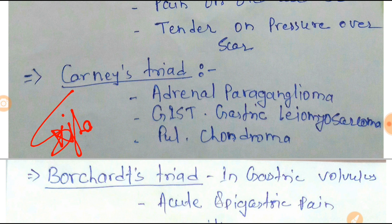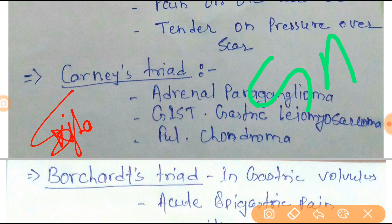Next one is Carney's Triad. The triad is adrenal paraganglioma, GIST — gastric leiomyosarcoma — and pulmonary chondroma. You can easily remember it by the trick GAP: G for GIST, A for adrenal paraganglioma, P for pulmonary chondroma.